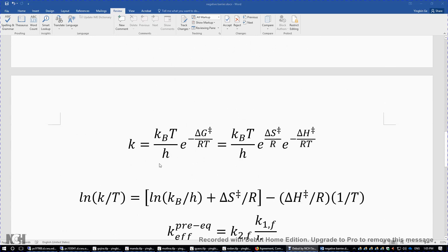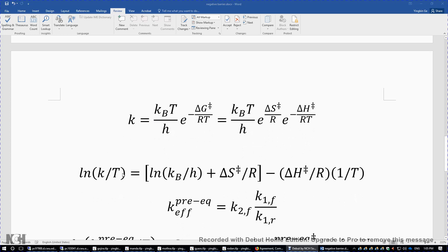Starting from this Arrhenius equation, we can expand ΔG into ΔH minus TΔS, giving us a more complicated expression. If we take the logarithm of k over T, moving T to the left-hand side, we get a linear equation. The natural logarithm of k over T is proportional to 1 over T with a slope -ΔH‡/R and an intercept which is ln(kB/h) plus the entropy of activation over R. Here we assume ΔS‡ and ΔH‡ are independent of temperature. This is a fairly reasonable and accurate approximation, as long as the temperature range is within tens of degrees Celsius.